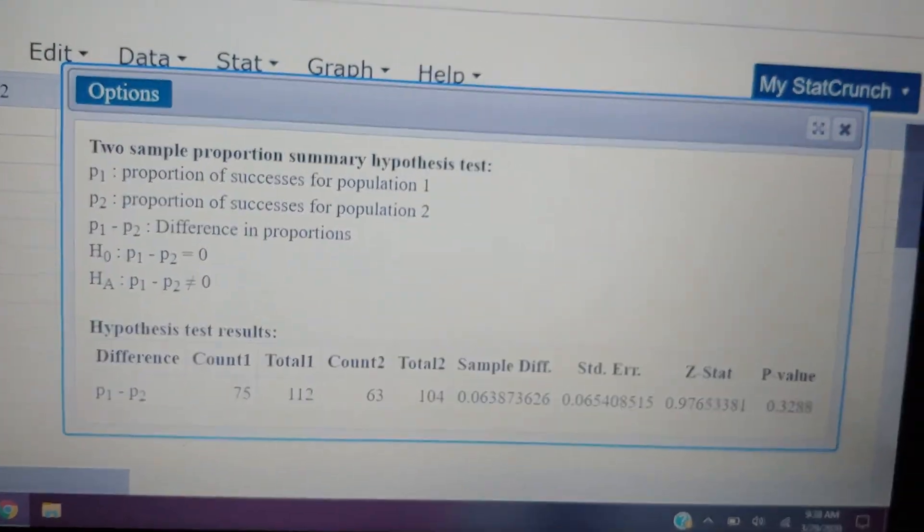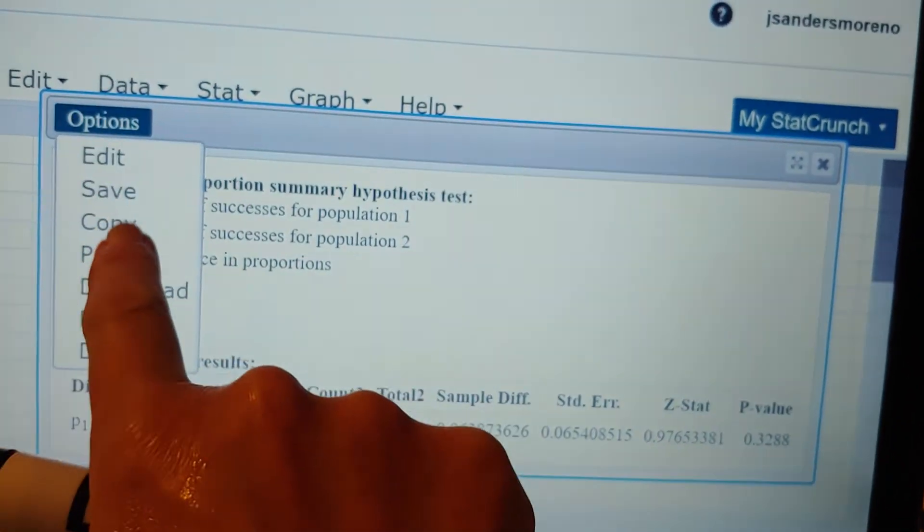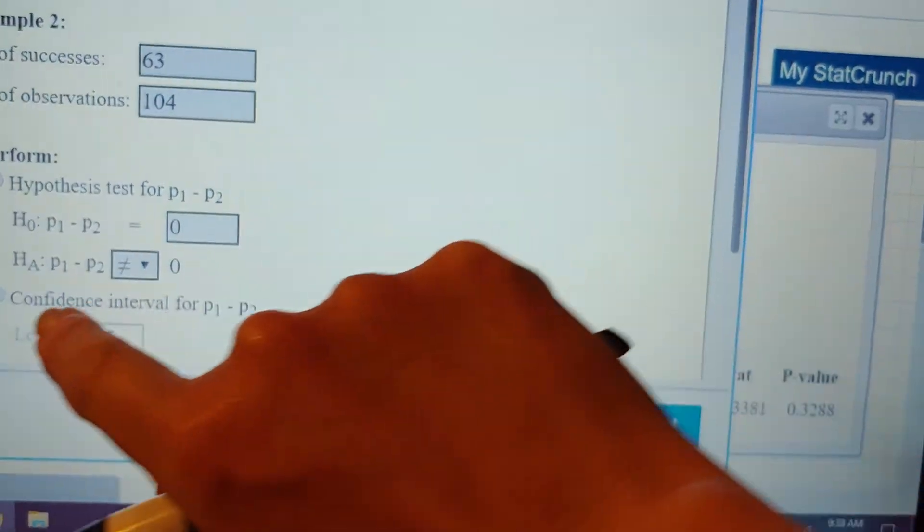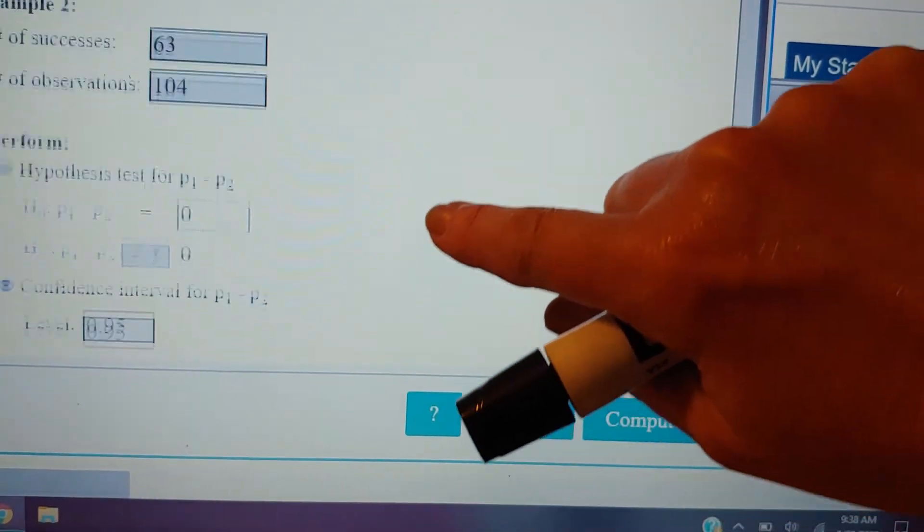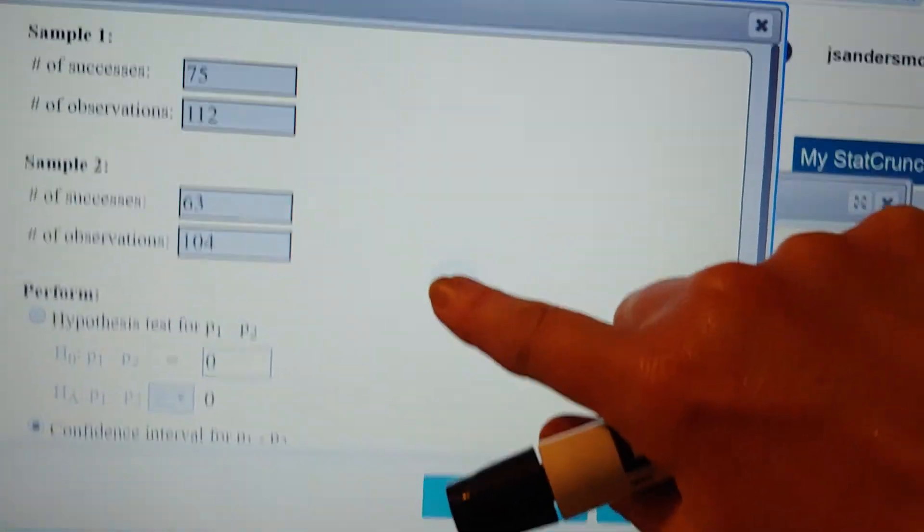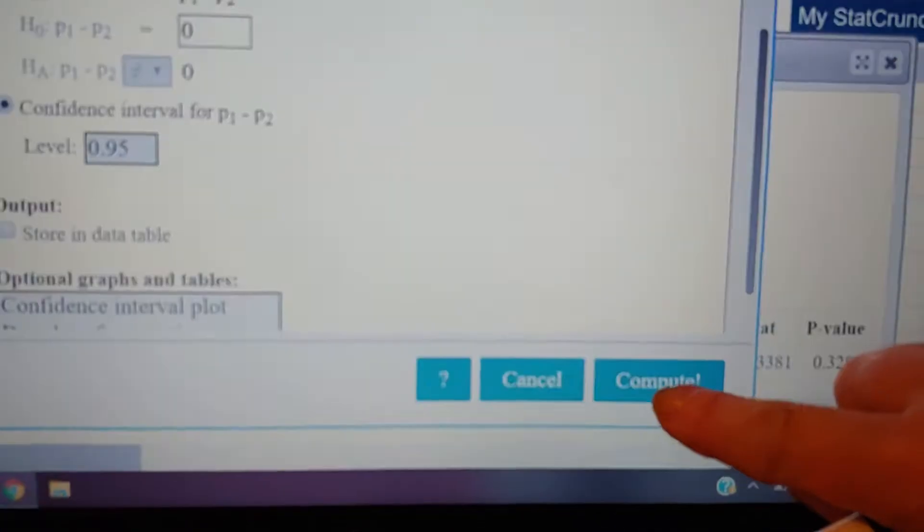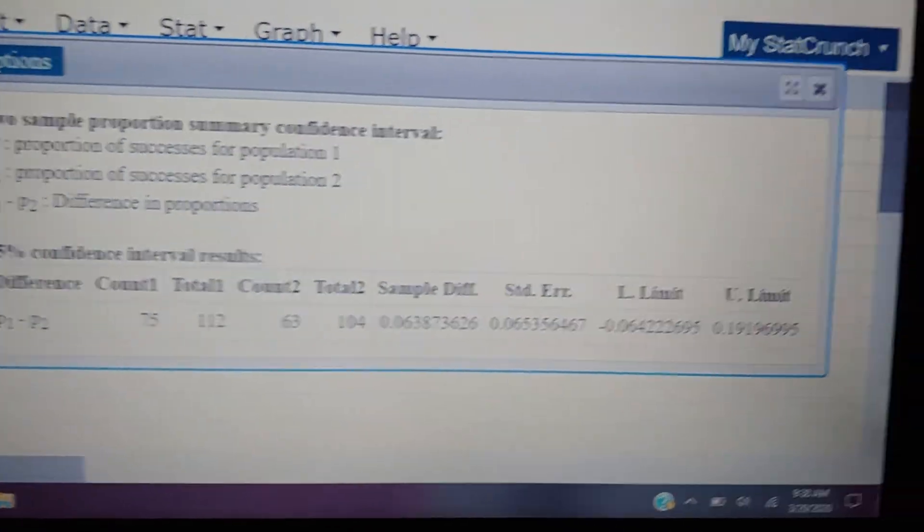You'll notice up on my screen are still the results from my hypothesis test. So I'm going to go to Options and Edit. And instead of hitting Hypothesis Test, I'm going to hit Confidence Interval. Notice I didn't change any of my data from before. It's all still there. There's my confidence interval. I'm going to hit Compute.